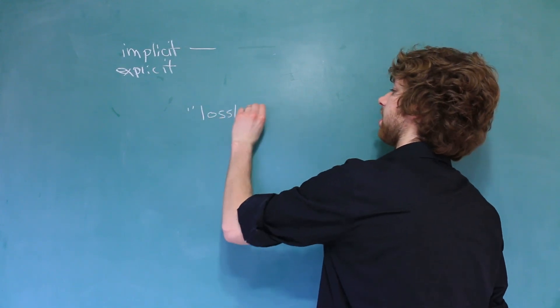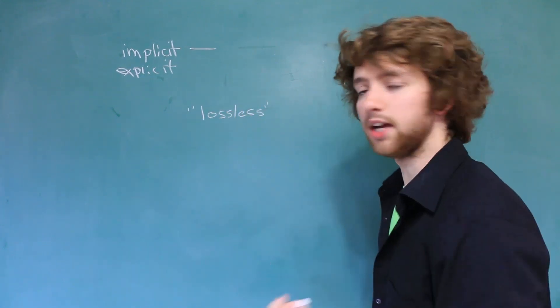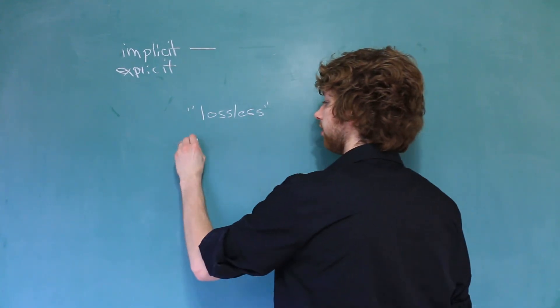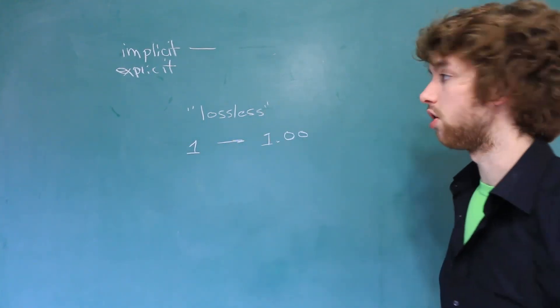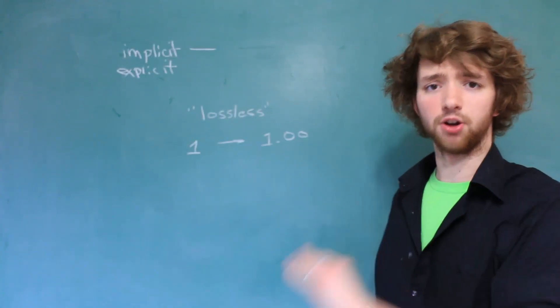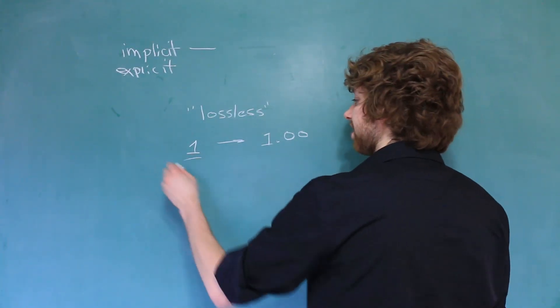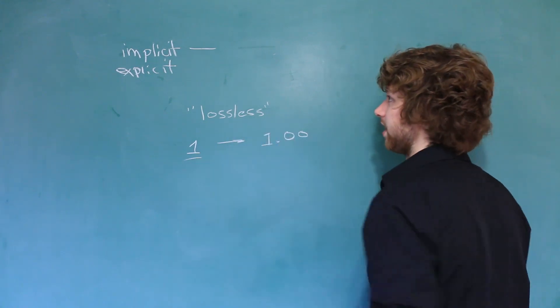Essentially what I'm saying is you could typecast an integer of one to a double of 1.00 and you can see you didn't lose any data at all. You're essentially storing the same exact thing just in a different data type.